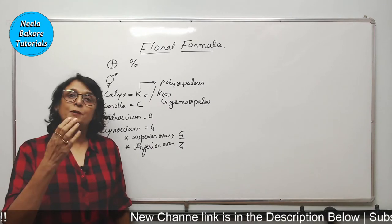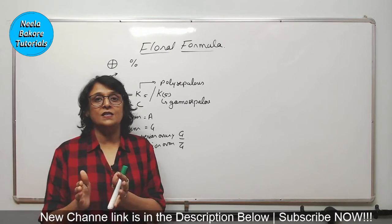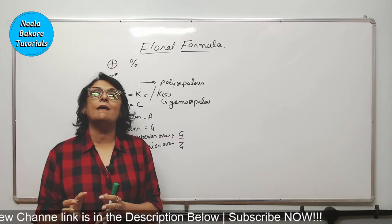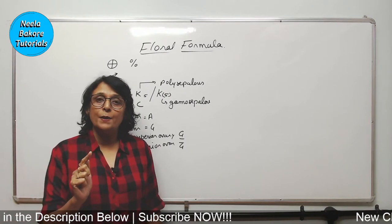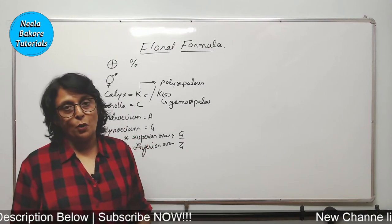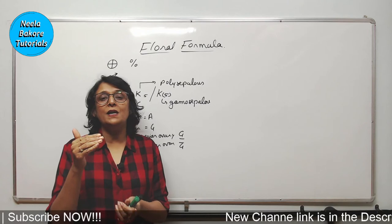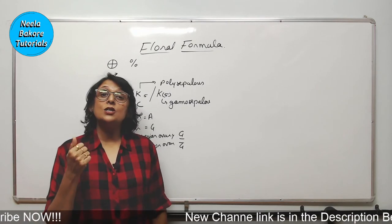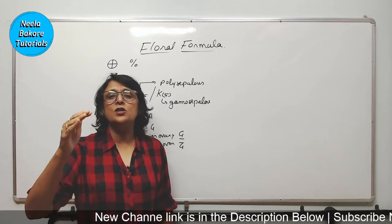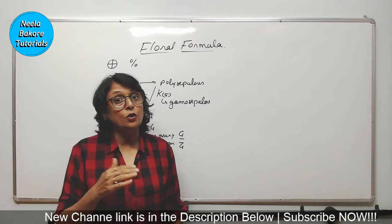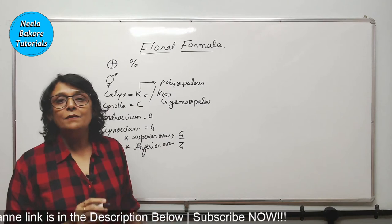Now you need to know the examples of these families. For Fabaceae, especially the Papilionaceae, pea is the important example. For Liliaceae family, lily flower is the important example. For Solanaceae family, Datura is the most important example. The questions asked are either about identifying the formula — whether it belongs to Liliaceae, Fabaceae, or Solanaceae — or they may give you an example like Brinjal, Soya Bean, or Tulip and ask you to match it to a formula. I am going to write one formula for you and then we will try to interpret it.